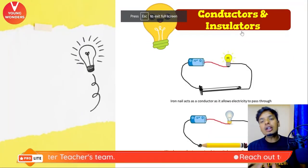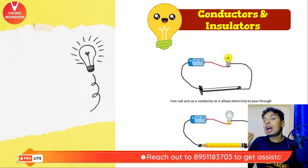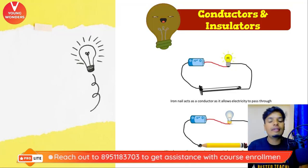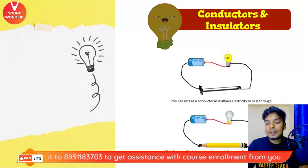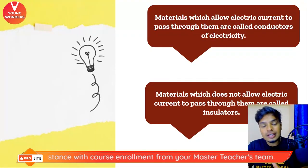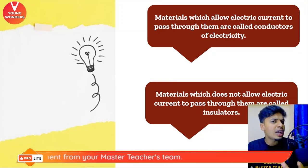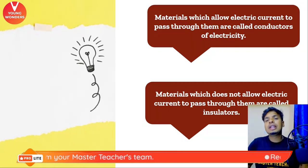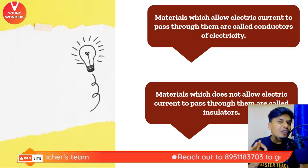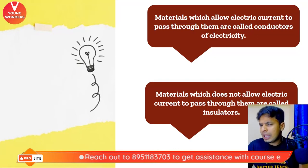There are certain materials which allow electric current to pass through them, and certain materials which do not. Materials which allow electric current to pass through them are called conductors. Materials which do not allow electric current to pass through them are called insulators. How can you check if something is a conductor or an insulator? By making your own tester! We can literally make our own tester to check if something is a conductor or an insulator.